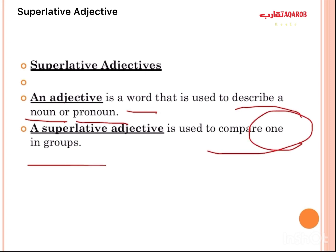A superlative adjective is used to compare one in a group. For example, 'Ali is the shortest in the class' — I compare Ali with all the students in the class. So an adjective describes a noun or pronoun, while a superlative adjective is used to compare one in a group.